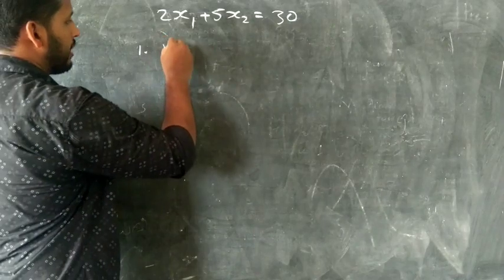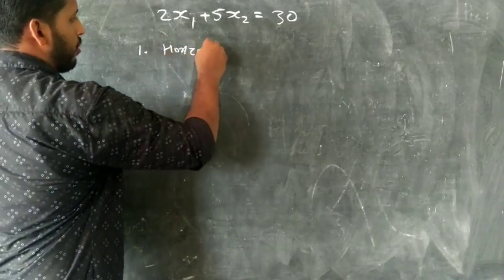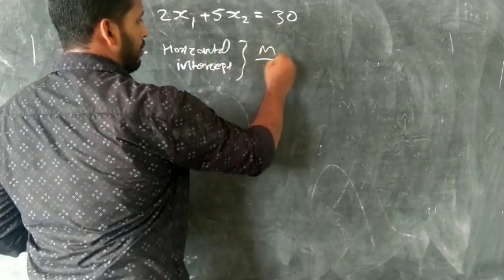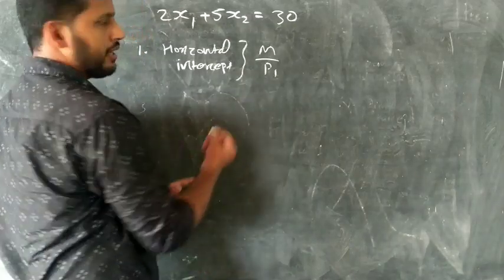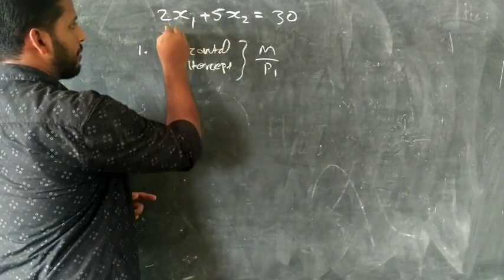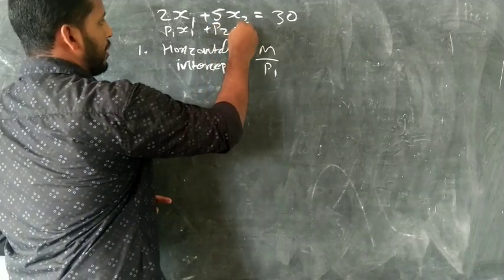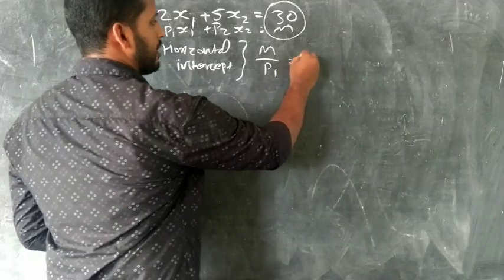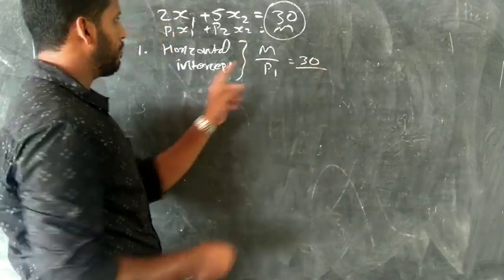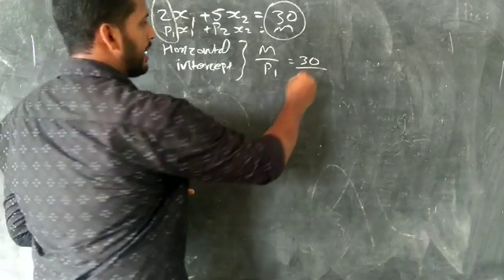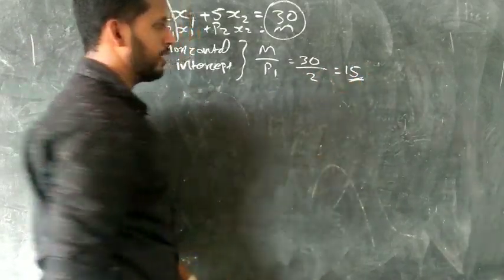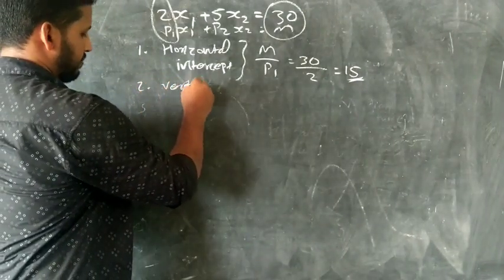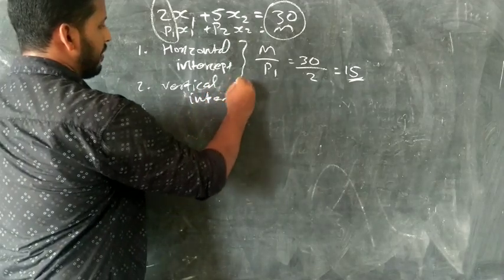The horizontal intercept is M by P1. The vertical intercept is M by P2.